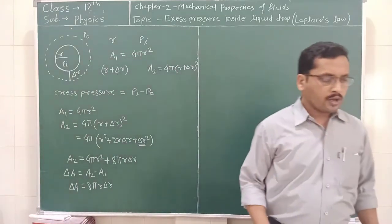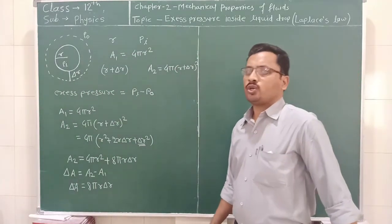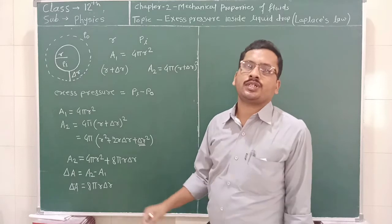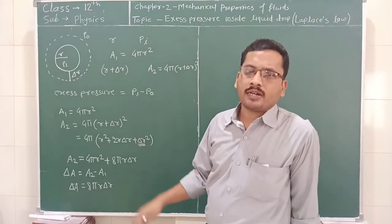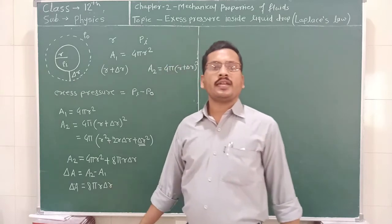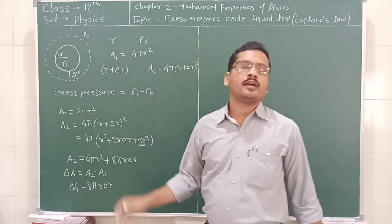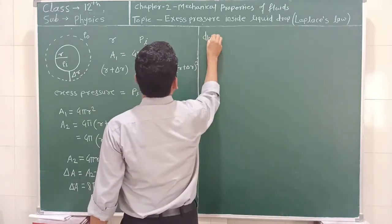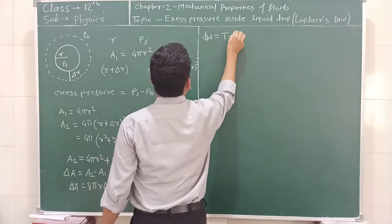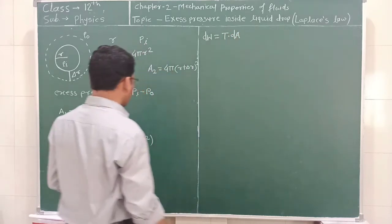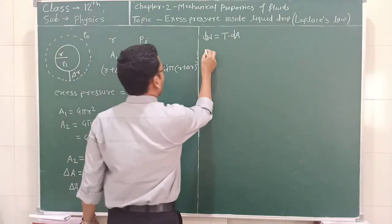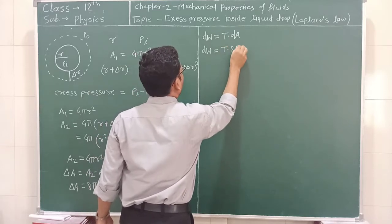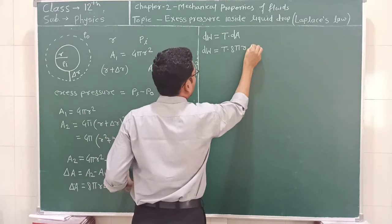Now, we know some work must be done to increase the surface area, because surface tension tries to minimize the surface area. But here the surface area gets increased, and to increase the surface area some work must be done. So we can write: DW is equal to the surface tension T multiplied by the change in area. That is, DW is equal to T times 8πR·δR.